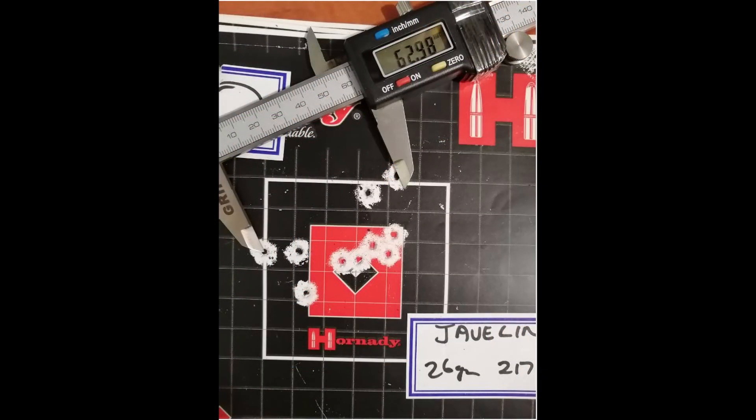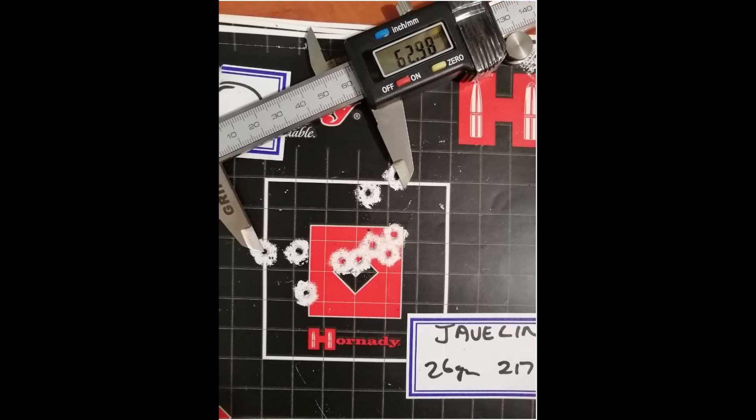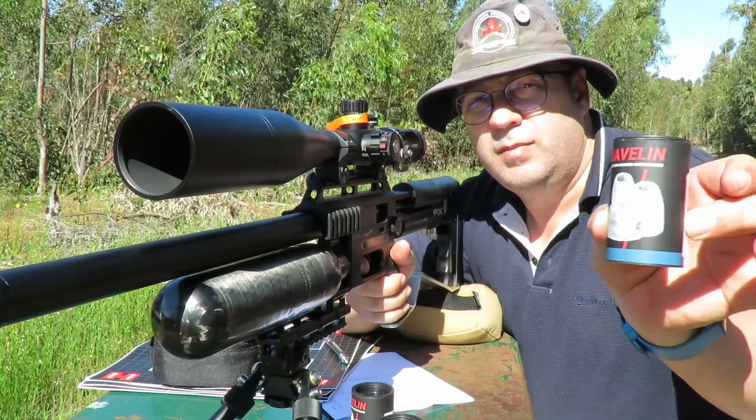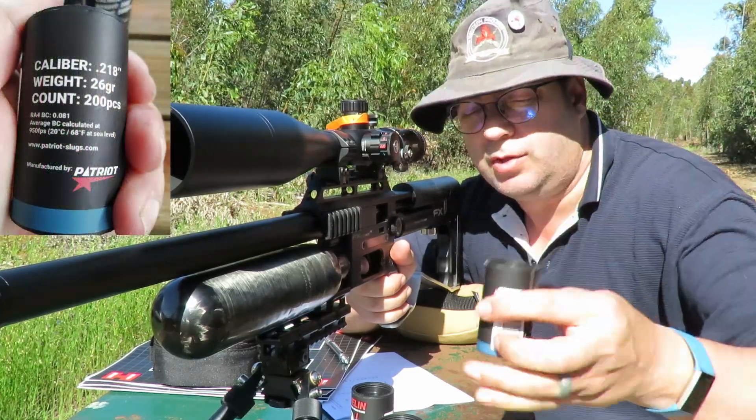Man oh man, if it wasn't for those two high shots that would have been the perfect line across the wind. The 26 grainers are a heck of a lot better in the wind. It has not affected that much and the height consistency was quite impressive. As I said, except for those two little babies on top, but that can be me as well. Overall not too bad. Okay, Javelins 218s, 10 shots, 100 meters.